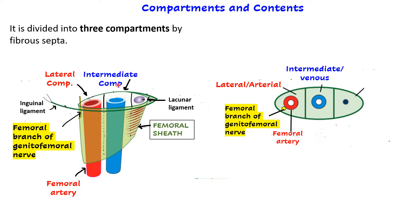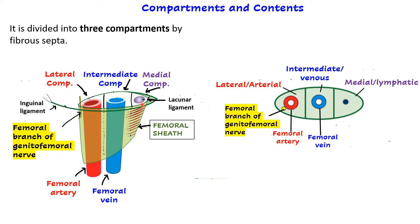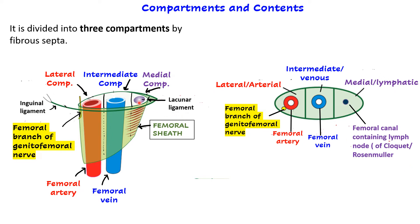The intermediate compartment is called the venous compartment because the femoral vein passes through it. The medial-most compartment is the smallest and is known as the lymphatic compartment. It contains one lymph node belonging to the deep inguinal group, known as the node or gland of Cloquet or Rosenmüller, plus lymphatics connecting the deep inguinal group with the external iliac group of lymph nodes, and loose areolar tissue.